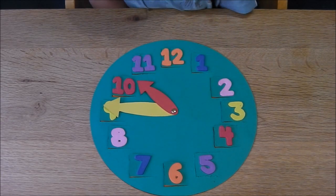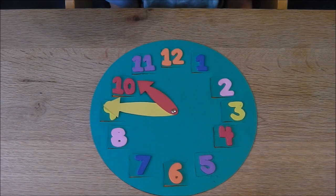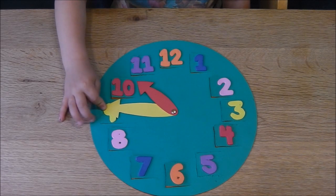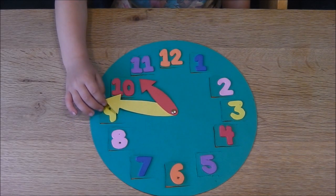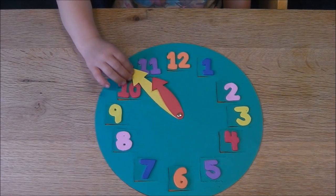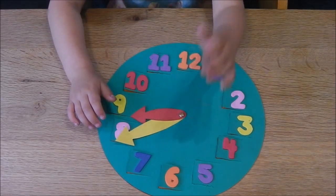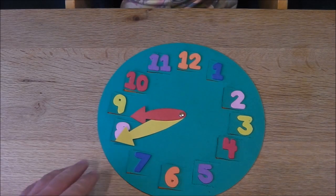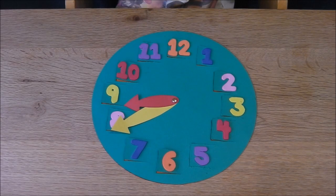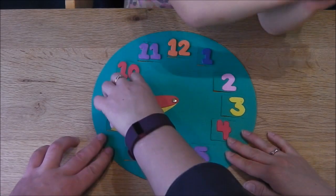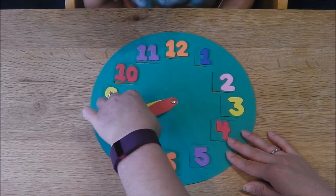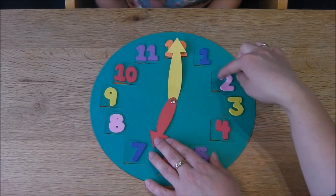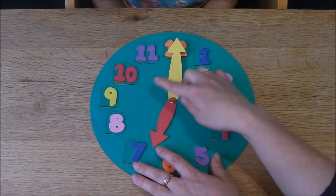On our clock then, what does the big hand point to? The yellow one? Nine. It's pointing to nine at the moment, but nine is the hour, isn't it? So we need to work out how many minutes that is. Can you remember how many minutes are in an hour? No, I forgot. 60. So this minute hand tells us the minutes. When it goes all the way round, back up to there, it has to have done 60 minutes.